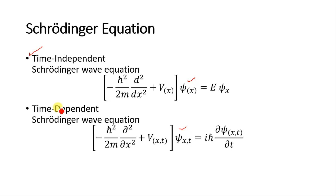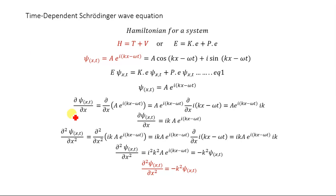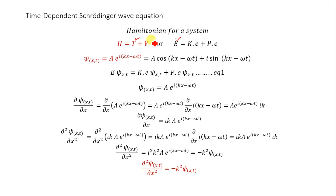Now we will derive the time-dependent Schrödinger wave equation. In classical mechanics, the total energy of a system is E = kinetic energy + potential energy. In quantum mechanics we deal with the Hamiltonian, which is also the total energy of the system: H = kinetic energy + potential energy.